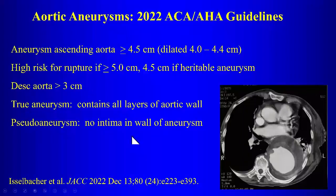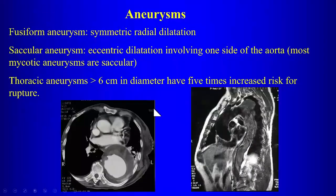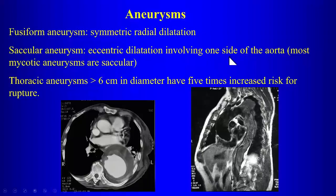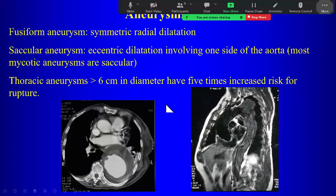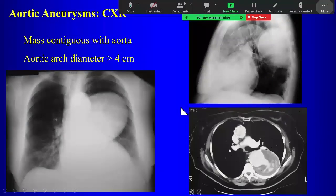A true aneurysm contains all layers of the aortic wall; a pseudoaneurysm has no intima within the wall. Aneurysms can be described as fusiform, with symmetric radial dilatation, or saccular, with an outpouching from one side. Saccular aneurysms may suggest mycotic aneurysms, which tend to be saccular. Once the aorta enlarges beyond five centimeters, especially to six centimeters, there is a significant increase in the risk of rupture.